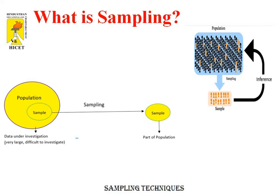What is sampling? Sampling is the process of selecting a group of individuals from a population to study them and characterize the population as a whole. Population includes all members from a specified group, all possible outcomes or measurements that are of interest. The sample consists of some observations drawn from the population — a part or subset of the population.